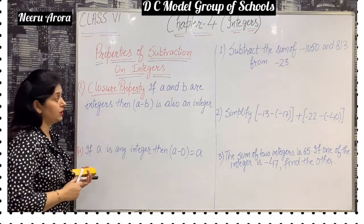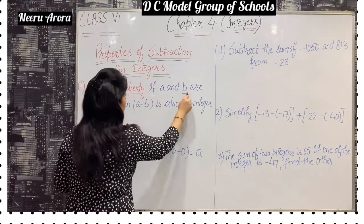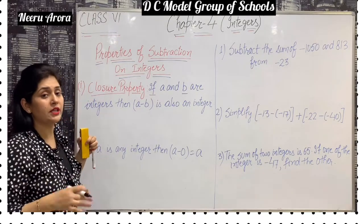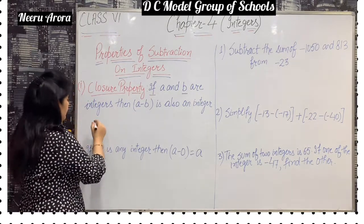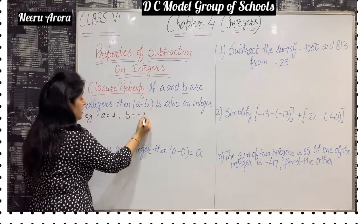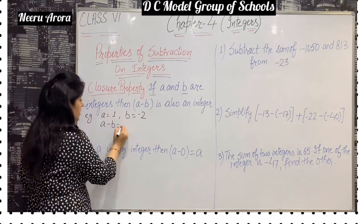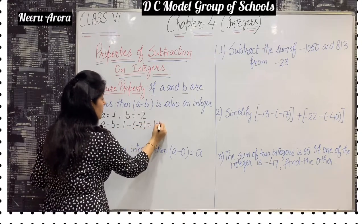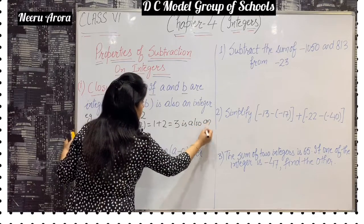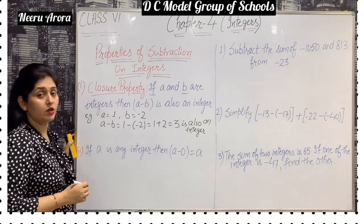First is the closure property. If A and B are integers, then A minus B is also an integer. Means the difference of two integers is always an integer. For example, A is 1 and B is minus 2. Both are integers. A minus B is 1 minus minus 2, which is 1 plus 2, which becomes 3. So 3 is also an integer. So the difference of two integers is also an integer.